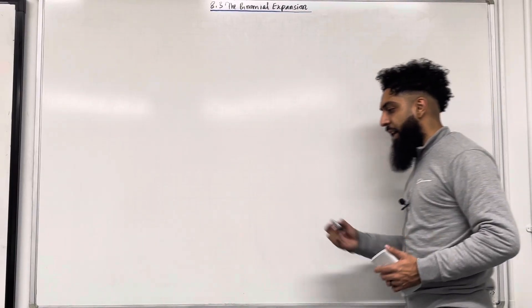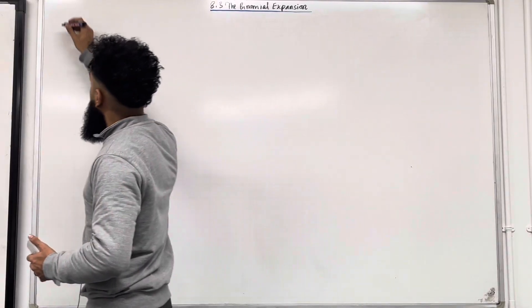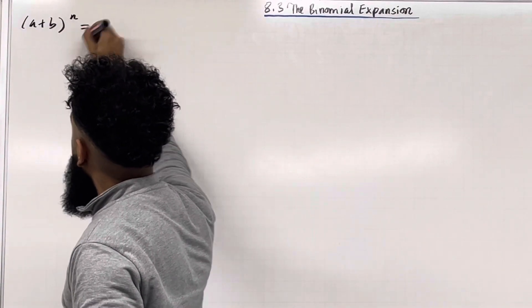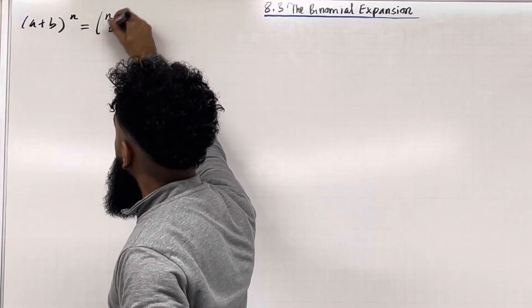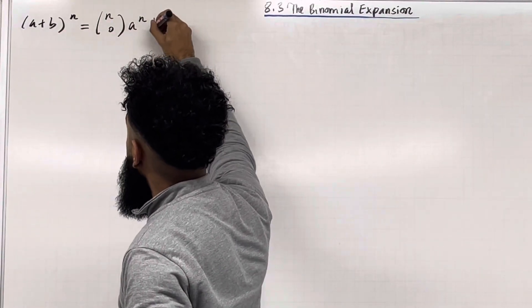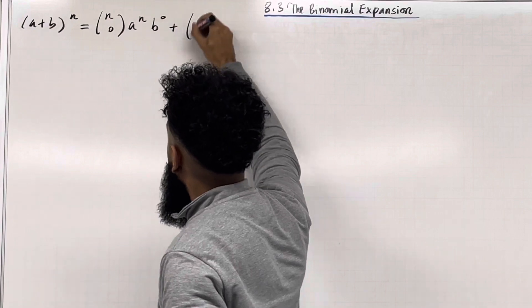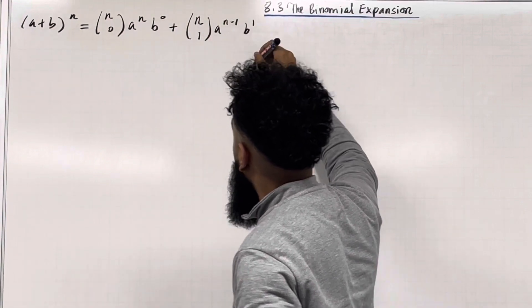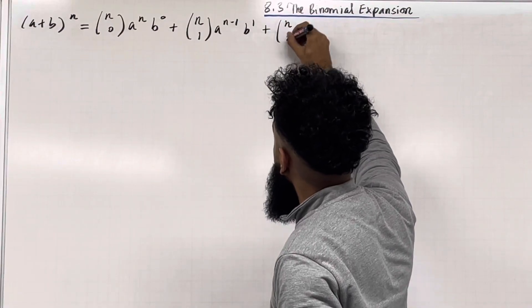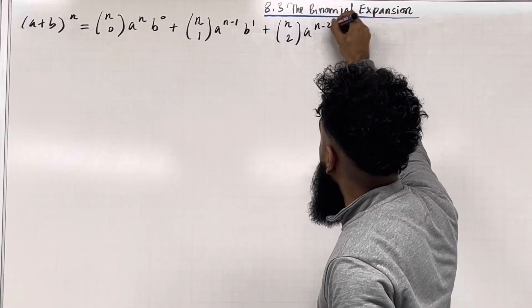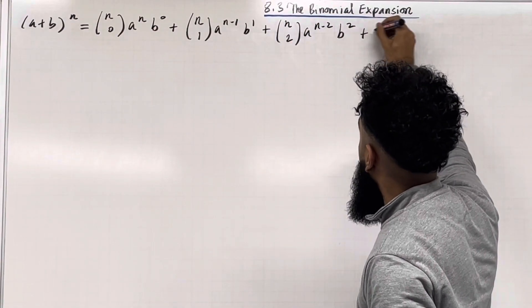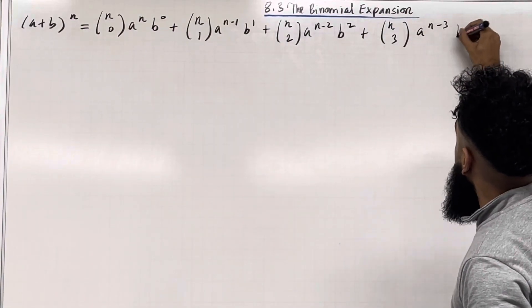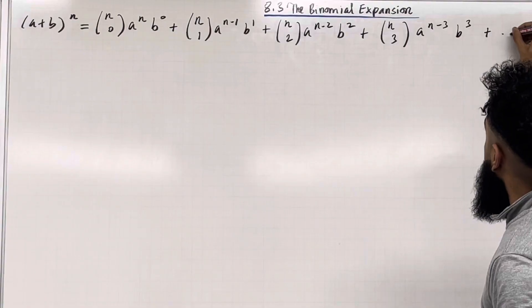Let's have a look at the binomial expansion formula. Consider (a + b) to the power n. This is given by: n choose 0, a to the power n, b to the power 0, plus n choose 1, a to the power n minus 1, b to the power 1, plus n choose 2, a to the power n minus 2, b to the power 2, plus n choose 3, a to the power n minus 3, b to the power 3, plus dot dot dot.